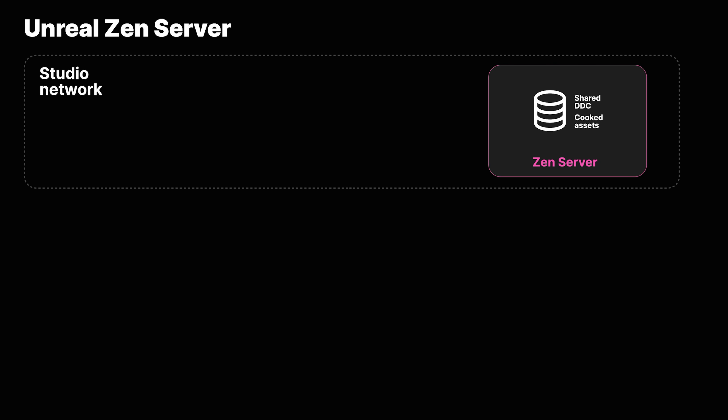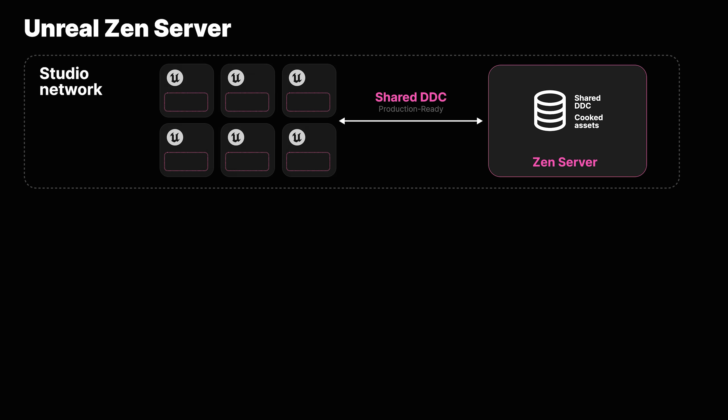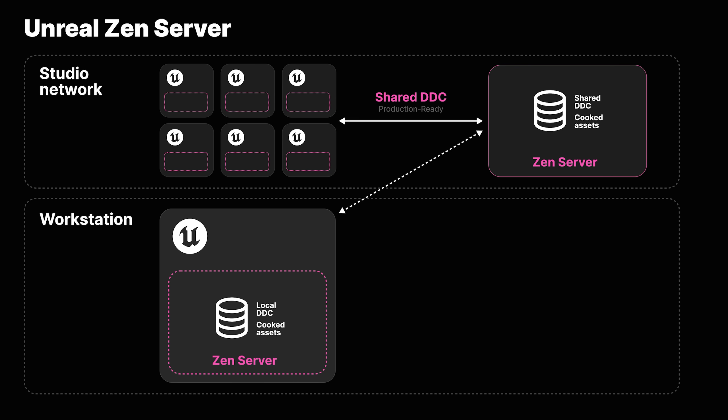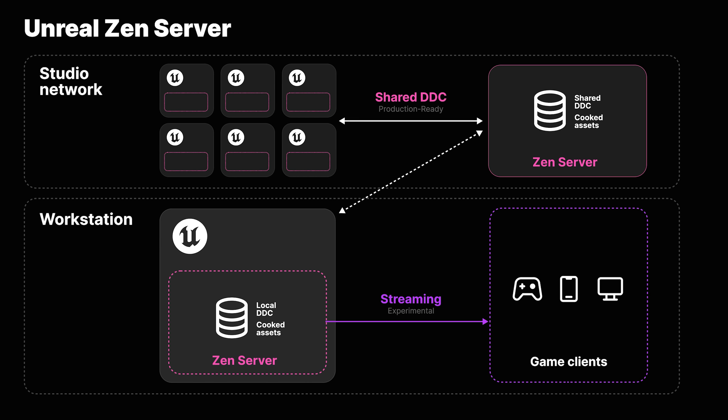Finally, this release sees many dev iteration tools reach production readiness, including Unreal Zen Server for deployment as a shared derived data cache, Unreal Zen Loader, Unreal Build Accelerator, and Unreal Horde. Meanwhile, an experimental new feature means that Zen Server can now stream cooked data to target platforms from console to mobile.